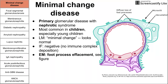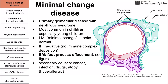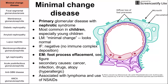On electron microscopy, that's where you see the abnormality — you see foot process effacement, shown in that cartoon figure on the right. The green cells are the foot processes, which make the outside barrier between the lumen of the capillary and the lumen of the tubule. The foot processes are smeared together on electron microscopy — that's called foot process effacement. The primary cause is idiopathic. Secondary causes include cancer, infection, an atopic state, and some drugs — specifically associated with lymphoma and the use of NSAIDs.